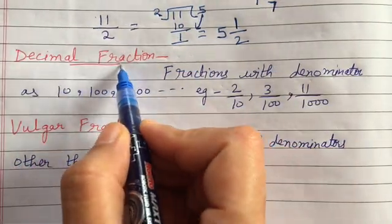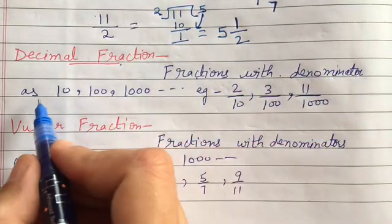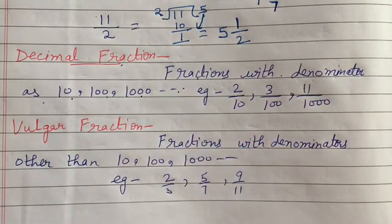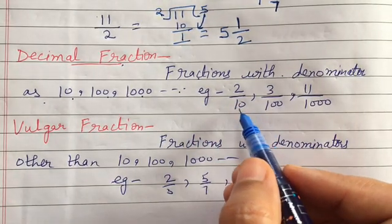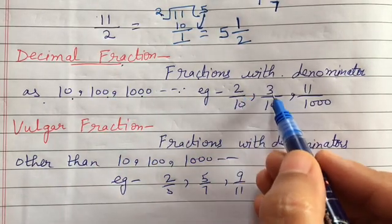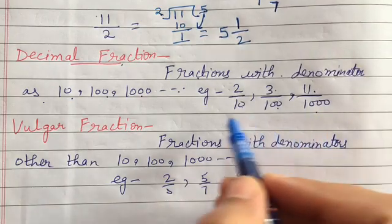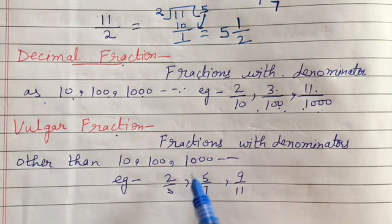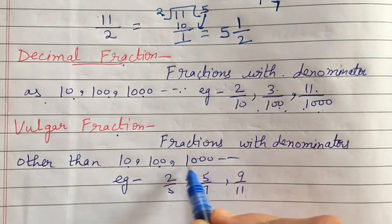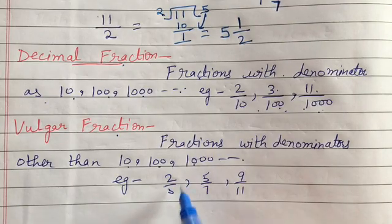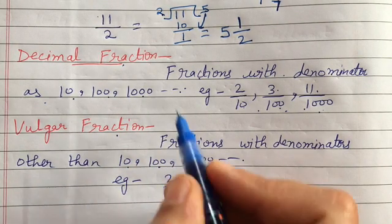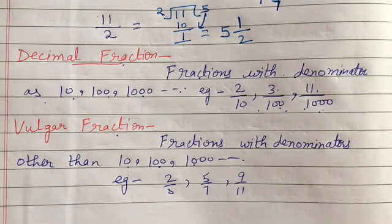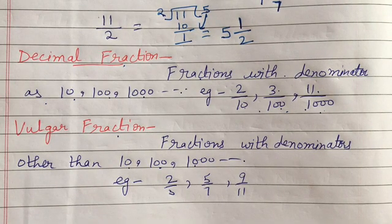Next is decimal fraction — a fraction with denominator as 10, 100, or 1000. For example: 2 by 10, 3 by 100, and 11 by 1000 — all have denominator 10, 100, or 1000. Vulgar fraction is another type in which the denominator is other than 10, 100, or 1000. If the denominator is 10/100/1000 it is a decimal fraction; if not, it is a vulgar fraction. Examples: 2 by 3, 5 by 7, and 9 by 11 are all vulgar fractions.